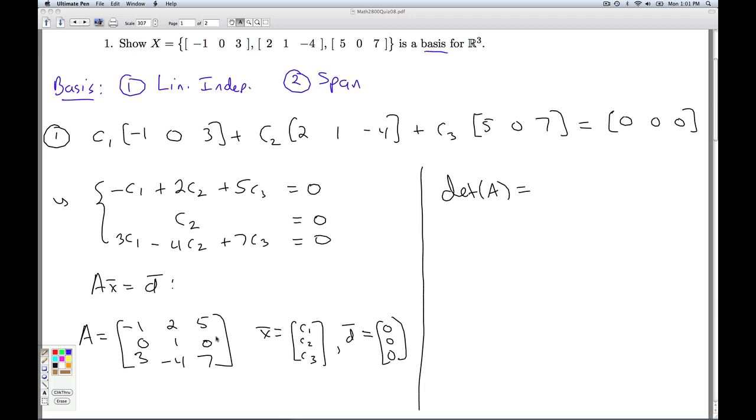If the determinant of A is non-zero, then A is invertible, and I'm done. So in looking at the determinant of A, I notice that the second row has two zeros in it that I want to exploit. So I'm going to expand along the second row using the alternating sign pattern. I get det(A) = 1 times the determinant of [-1, 5; 3, 7]. So I get -7 minus 15, which is -22.